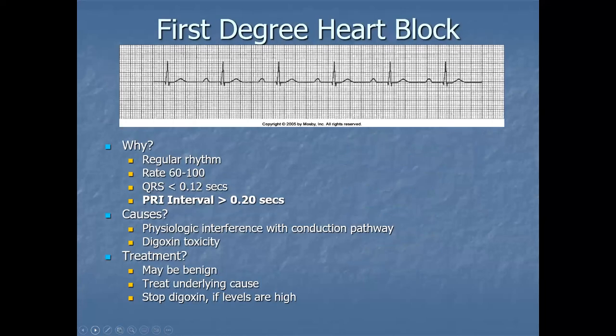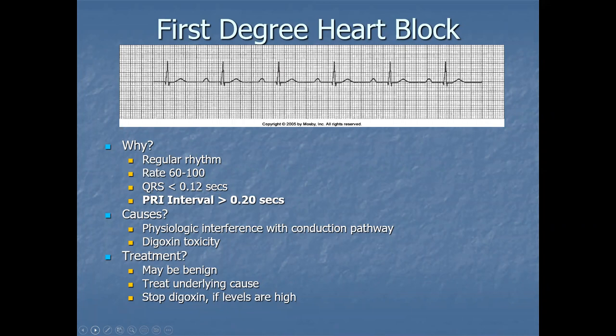First degree heart block: the PR interval is greater than 0.20 seconds — something is getting through but it's delayed. Causes include physiologic interference with the conducting pathways, perhaps some injury to the tissue surrounding that pathway, and digitoxicity. Digoxin can be used to treat dysrhythmias, but its serum levels must be monitored carefully, as the treatment can contribute to other dysrhythmias including first degree heart block. Treatment: it may be benign and just monitored; if digitoxicity is suspected, stop digoxin and replace with another drug.